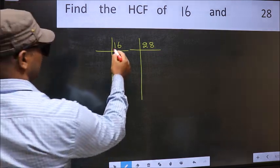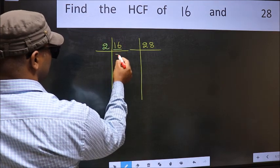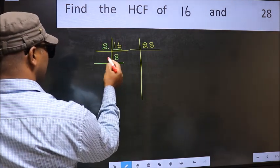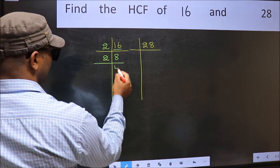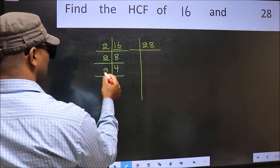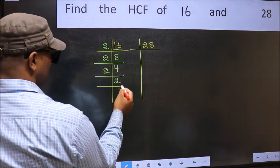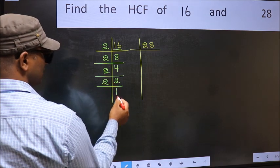Here we have 16. 16 is 2 times 8. 8 is 2 times 4. 4 is 2 times 2. 2 is a prime number, so 2 times 1.